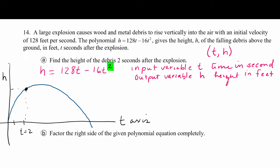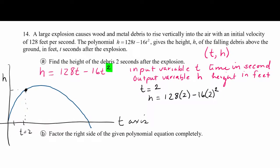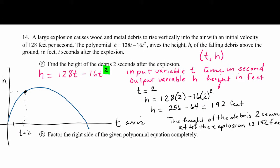So how we're going to do that is we're going to substitute t = 2 into our function. And then we're going to just evaluate this. You can use your calculator. So we get that h is 256 - 64, or 192 feet. And then our conclusion statement is that the height of the debris 2 seconds after the explosion is 192 feet.